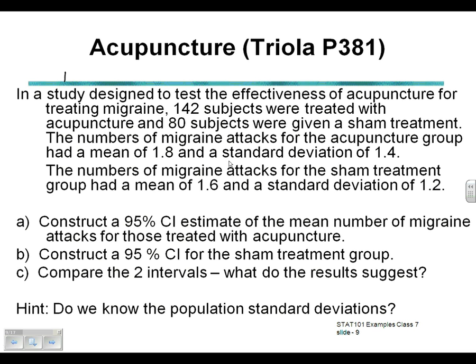Here we're going to be calculating a 95% confidence interval for the mean number of migraine attacks for those treated with acupuncture. We're looking at a study designed to test the effectiveness of acupuncture for treating migraines. We have a sample size of 142 subjects treated with acupuncture and 80 with a sham treatment, and we're given a mean and standard deviation for each of those two groups.